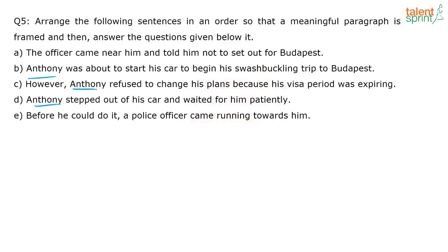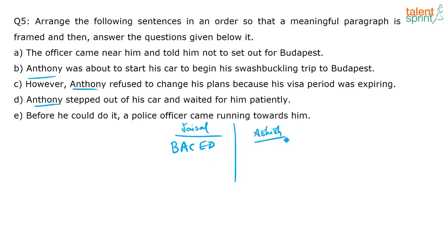Students propose sequences. One sequence is B, A, C, E, D — that's Faisal's. Another is B, E, A, D, C — that's Ashish's. Anand comes up with B, D, A, E, C, and another variation B, D, A, C, E. All of you can also put down your sequences, or if you relate to any of these, you can just say. So, all of you unanimously agree that B is the topic sentence — why? Because it introduces the subject.